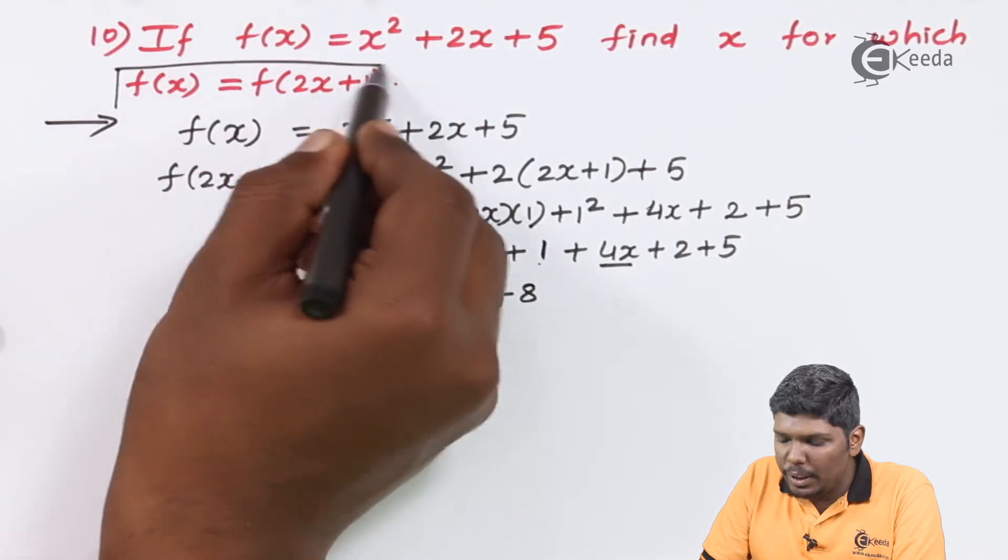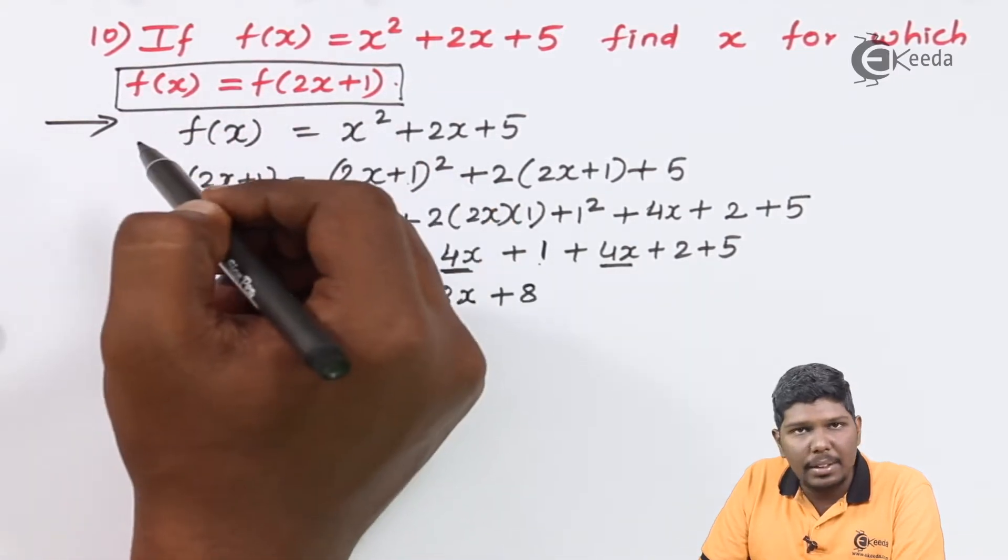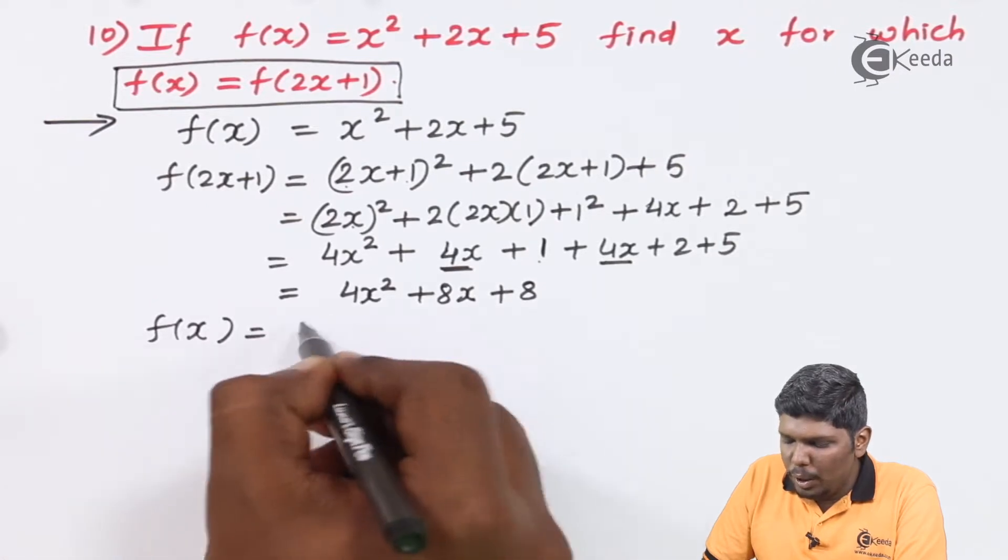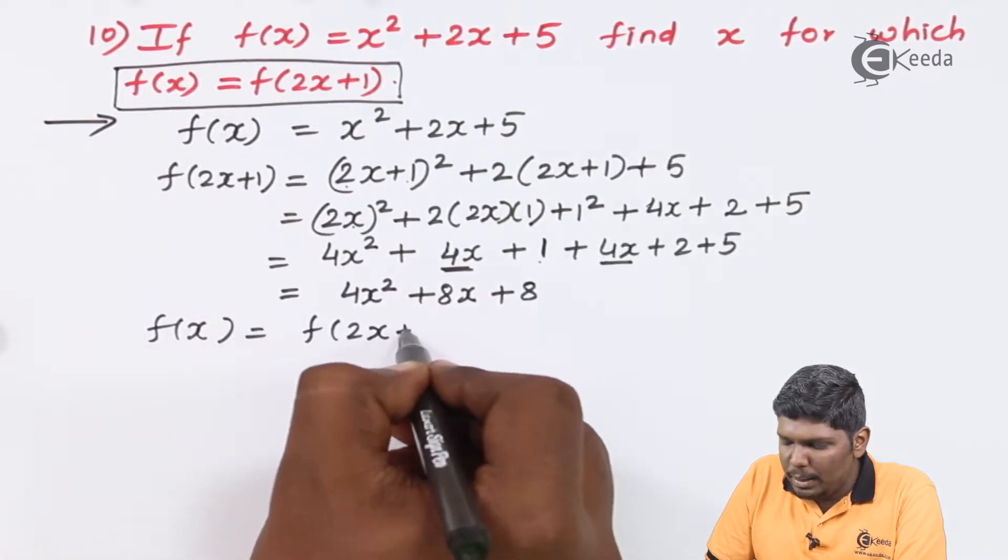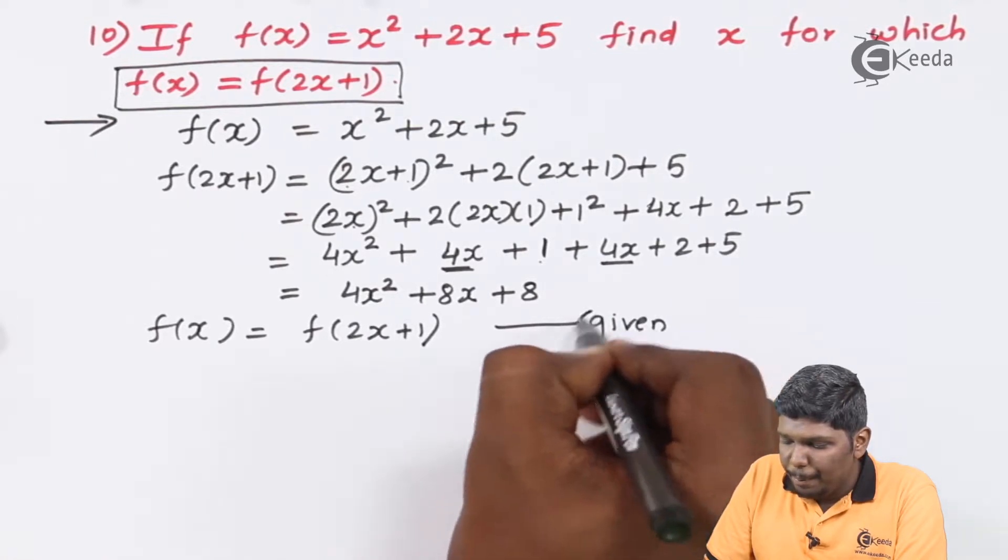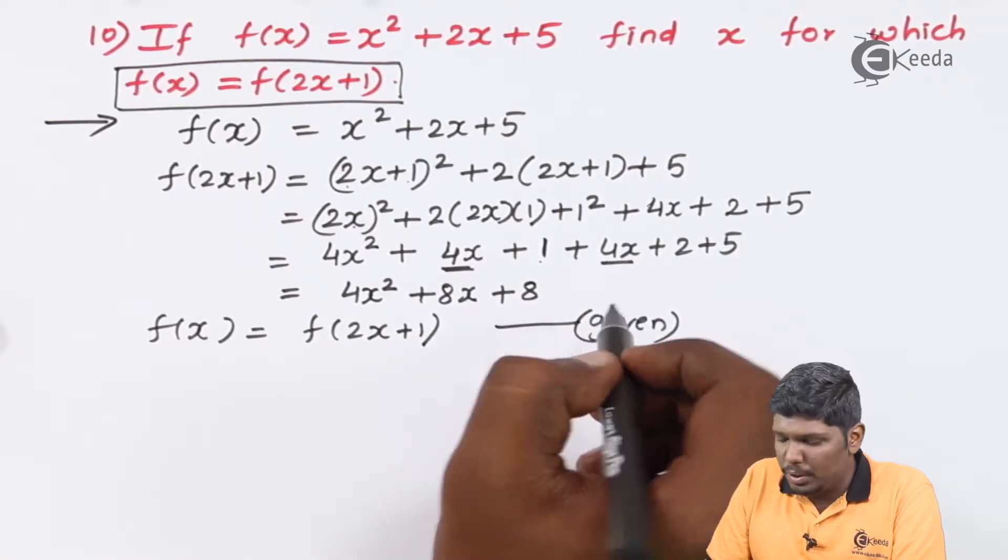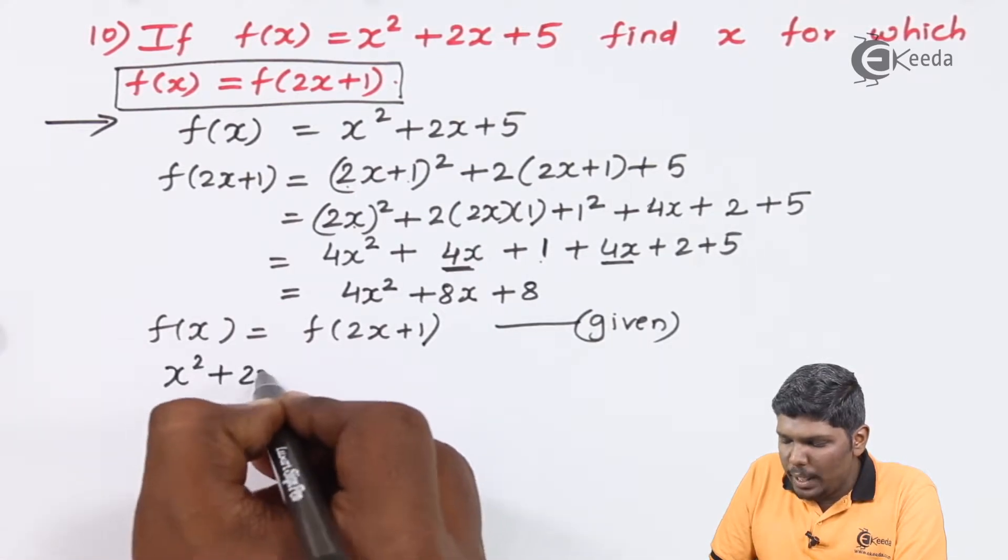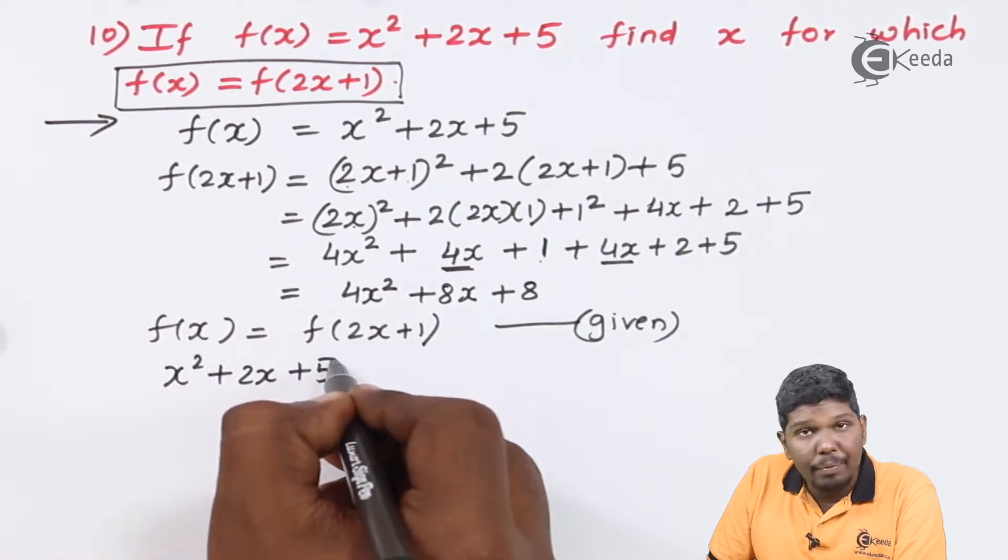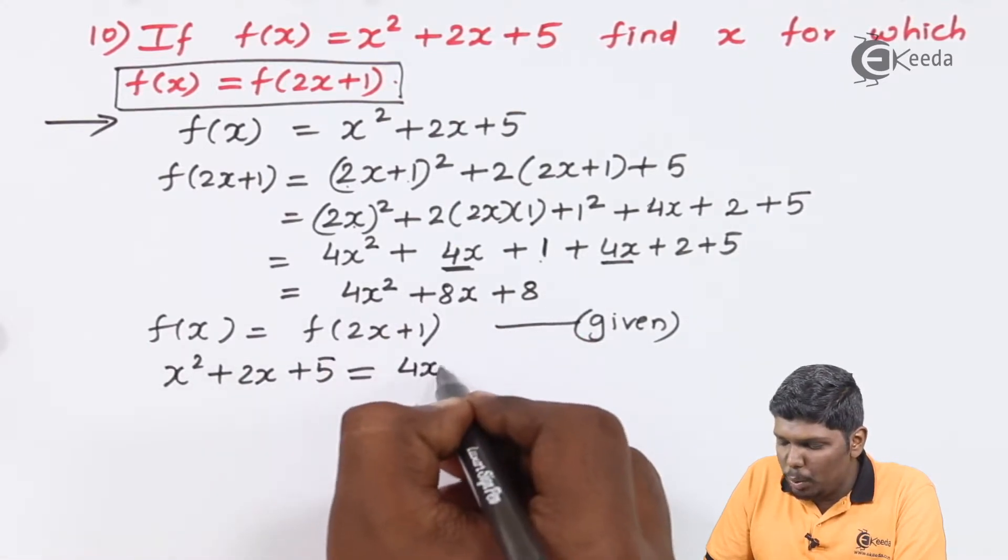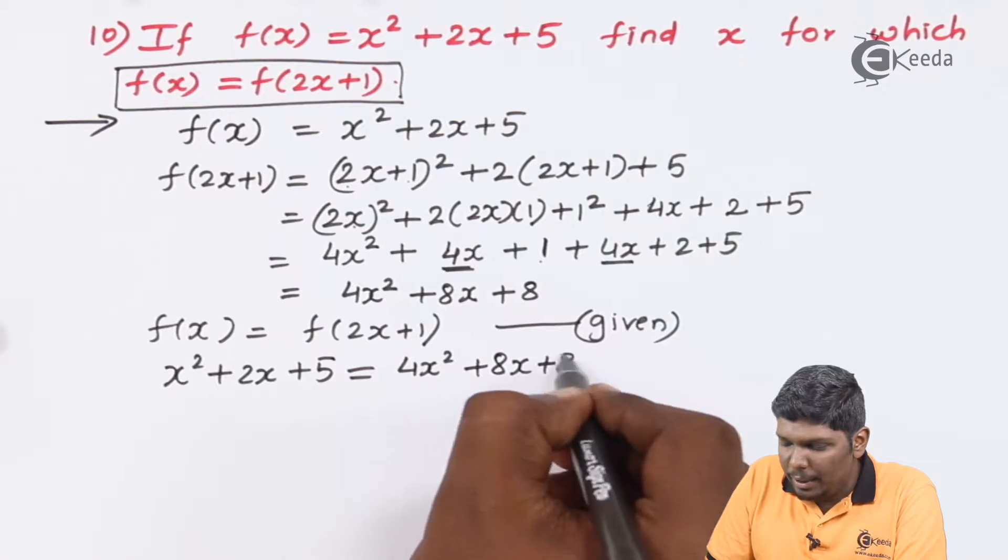Now let us take this equation and equate both the parts. So we have f(x) = f(2x+1). This part is already given. Now let us substitute the values. So f(x) we have x² + 2x + 5, and f(2x+1) is 4x² + 8x + 8.